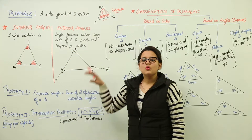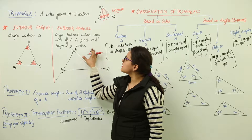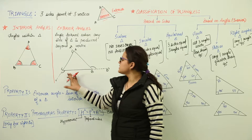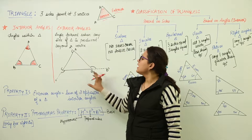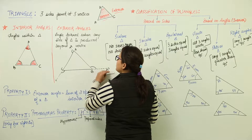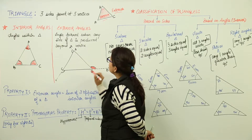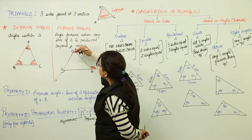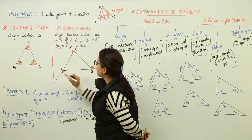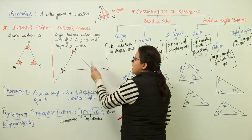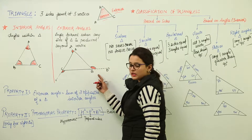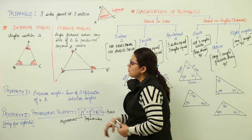Exterior angles are formed when any side of a triangle is produced beyond a vertex. For example, in triangle ABC, I have extended its side beyond vertex B, due to which I have got this angle. Similarly, I have extended side AB beyond A to get this angle, and extended AC beyond C to get this angle. These are the angles formed outside the triangle — the exterior angles. We have three exterior angles and three interior angles for a triangle.